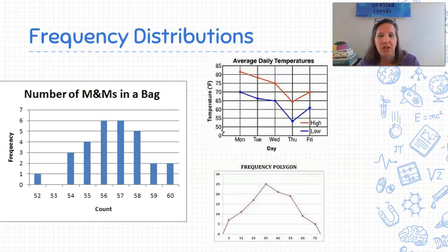And I have a couple of pictures of each of these for you. So these would all be considered frequency distributions. So on the left-hand side, we have the number of M&Ms in a bag. That is a histogram or a bar graph. And then the average daily temperatures and the frequency polygon are ideas of line graphs or polygons.